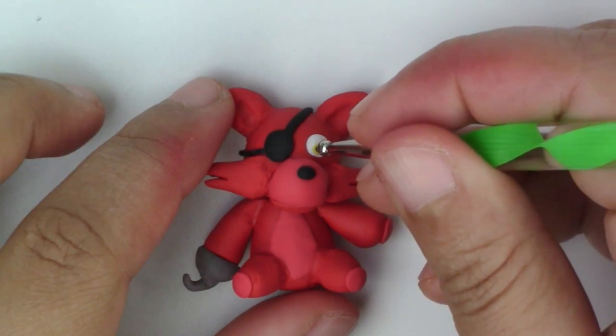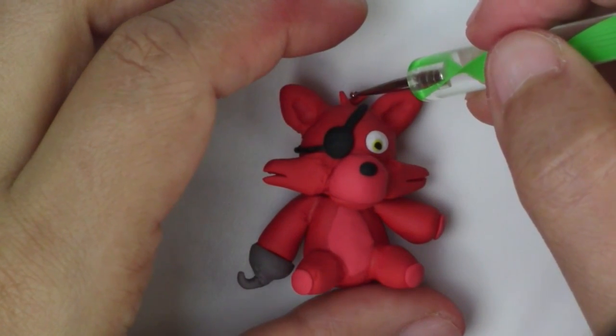Now add yellow and black for the pupils, as well as a small strand of fur on top.